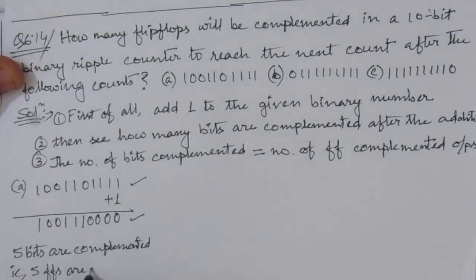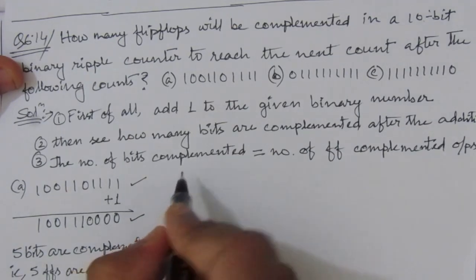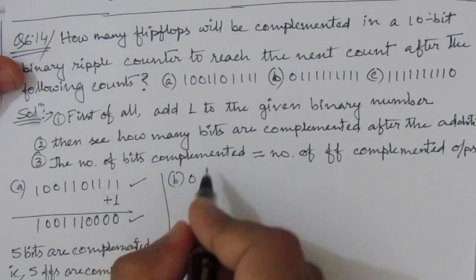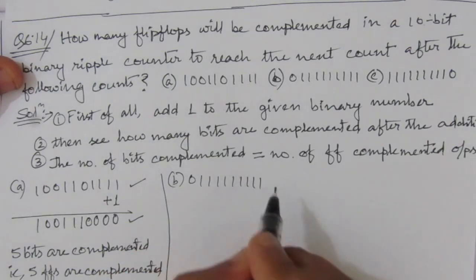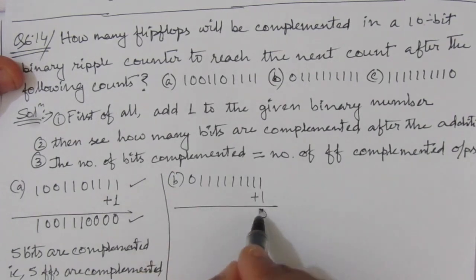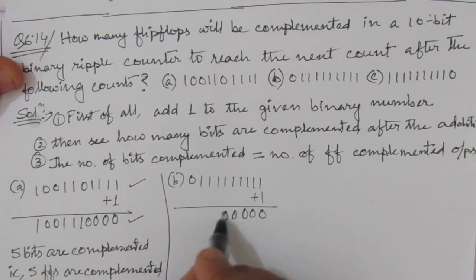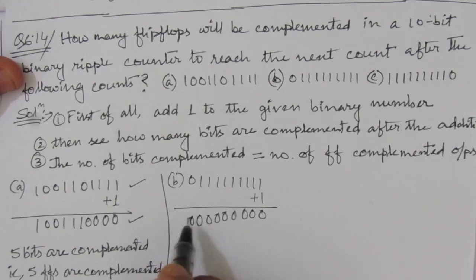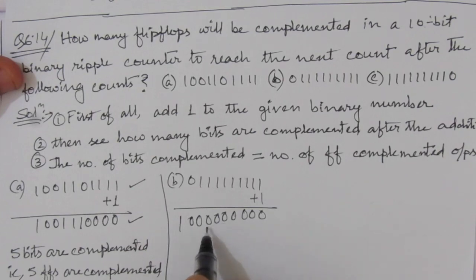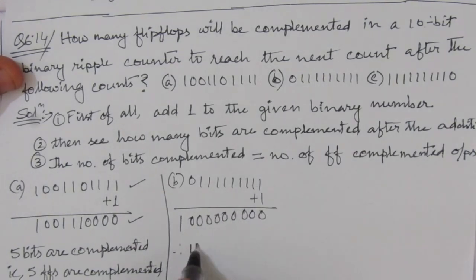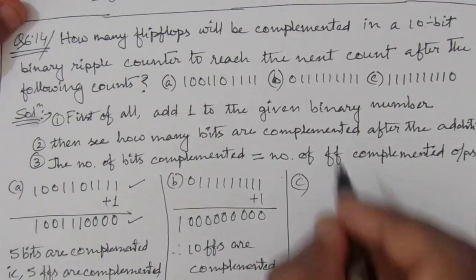For part (b) we have 0111111111. Adding one to this number gives 1000000000. Counting the complemented bits: one, two, three, four, five, six, seven, eight, nine, ten — each bit is complemented. Therefore, ten flip flops are complemented.